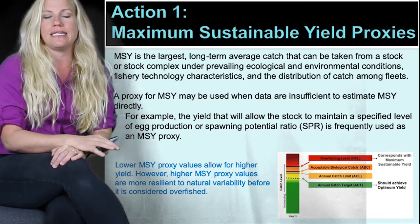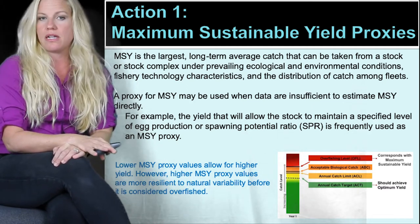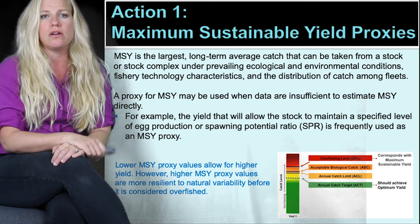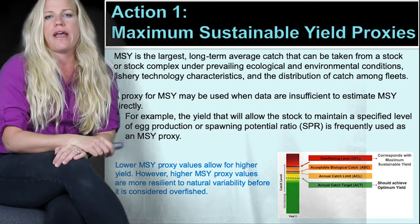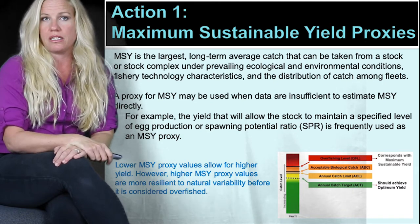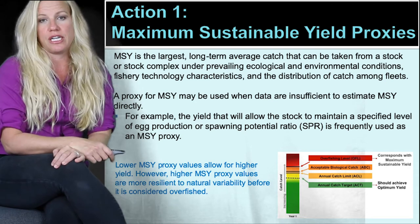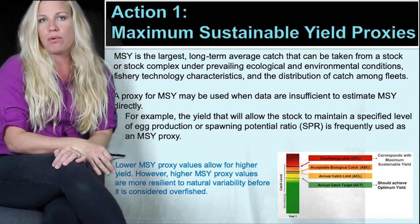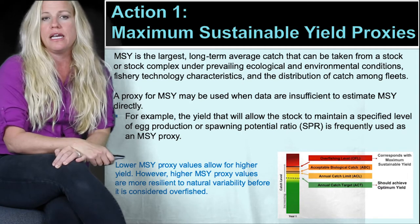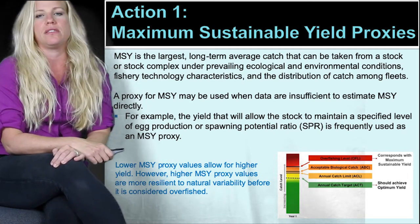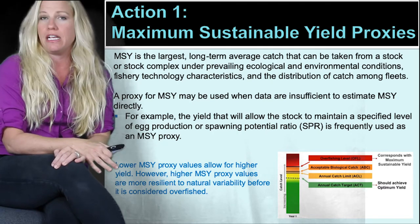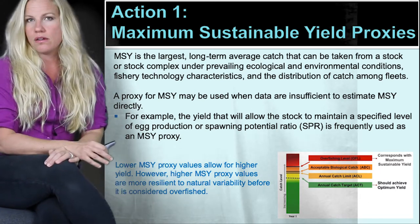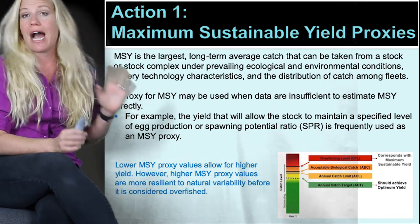Maximum sustainable yield is the largest long-term average catch that can be taken from a stock or stock complex under prevailing conditions. Those conditions can be ecological or environmental, and they also consider fisheries technology characteristics as well as distribution of catch among different fleets. In cases when data are insufficient to estimate maximum sustainable yield directly, we can select to use a proxy. For example, we often use an MSY proxy that is the yield that would allow the stock to maintain some specified level of egg production, or what we call spawning potential ratio. It is important to note that a lower MSY or proxy value does allow for higher yield.